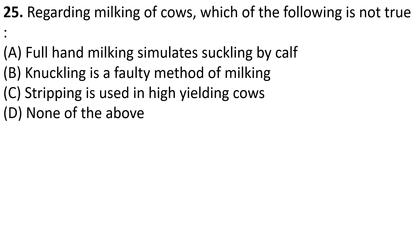Regarding milking of cows, which of the following is not true? Full hand milking is similar to suckling by calf. Knuckling is a faulty method of milking. Stripping is used in high yield cows. The answer is Option C — stripping is used in high yield cows is not true.